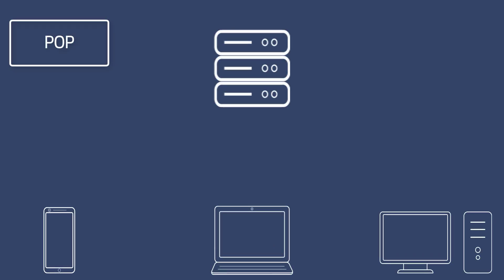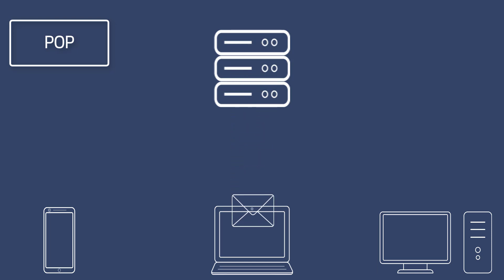We'll start by looking at POP. When one of your devices connects to the mail server using POP, it simply just downloads a copy of that email. You can set the settings so that it then deletes the copy of the mail on the mail server as well, so the only copy of that email resides on the device that's connected to the mail server.